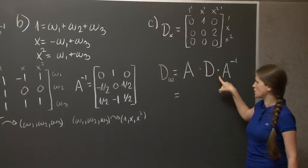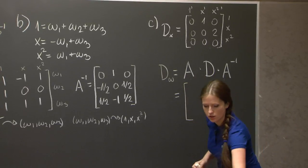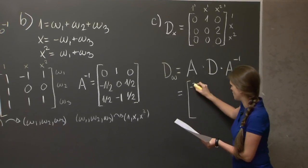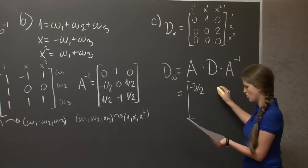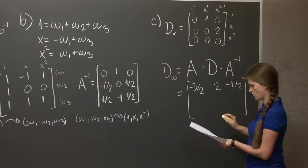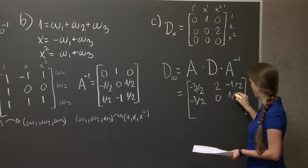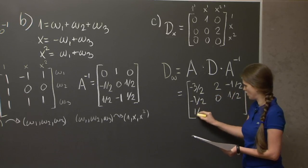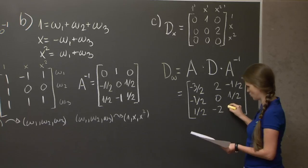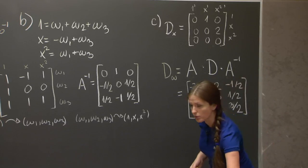So if we want to take a derivative of something written in the basis w1, w2, w3, let's first write this something in basis 1, x, x squared. Then let's take a derivative of it. And then let's write it back in the original basis that we want. So it's multiplication of three matrices. We have all three. Matrix multiplication is easy. And my oracle says that this should be -3/2, 2, -1/2, -1/2, 0, 1/2, and 1/2, -2, 3/2. And that solves the problem.